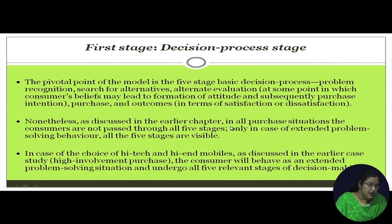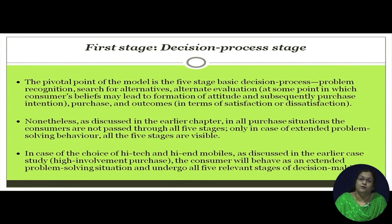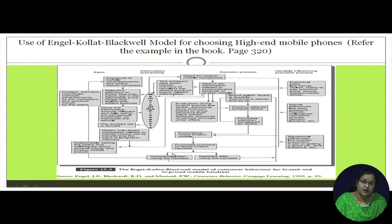As discussed in earlier modules, not all purchase situations pass through all five stages. Only in cases of extended problem solving behavior are all five stages visible. Since we are talking about a high-tech mobile phone, which is an expensive product, it is a high-involvement, extensive problem solving decision. Therefore, we can see all five stages of the buying decision making process very clearly here.